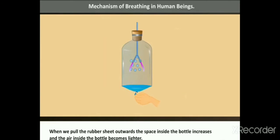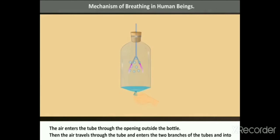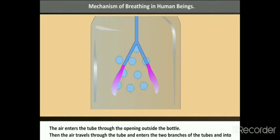When we pull the rubber sheet outwards, the space inside the bottle increases and the air inside the bottle becomes lighter. So the dense air rushes into the balloons from outside. The air enters the tube through the opening outside the bottle, then travels through the tube and enters the two branches and into the balloons.